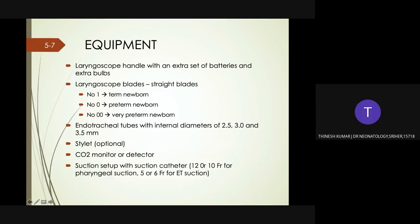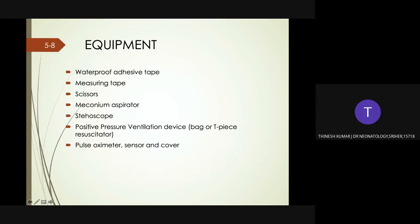Endotracheal tubes with internal diameter of 2.5, 3, and 3.5 millimeters — a stylet is optional. CO2 monitor or detector is optional. Suction setup with suction catheter size 10 French or 12 French for suctioning from the laryngopharynx, and size 8, 6, or 5 French for suctioning from endotracheal tubes. Also needed: waterproof adhesive tape or tube securing device, measuring tape, endotracheal tube insertion depth table, scissors, meconium aspirator, stethoscope, T-piece resuscitator, ambu bag and tubing for blended air and oxygen, pulse oximeter sensor and cover, laryngeal mask size 1, and 5 ml syringe.